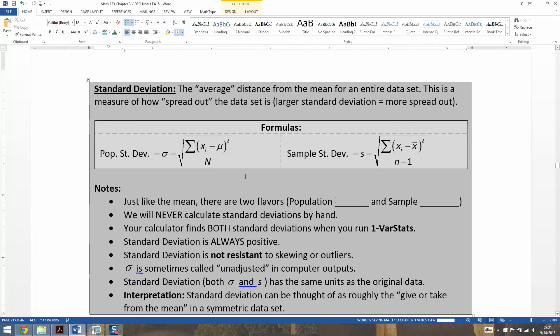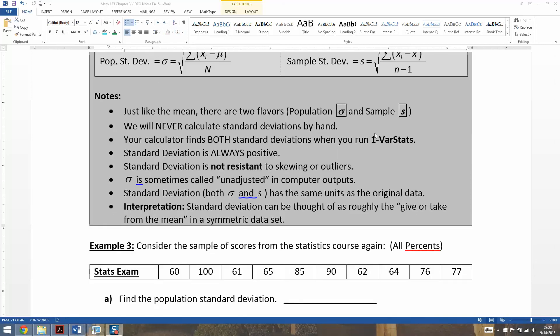So there are two flavors of standard deviation, just like there were two flavors of the mean, namely the population standard deviation and the sample standard deviation. So the population standard deviation is sigma, the sample standard deviation is s. And there those are.